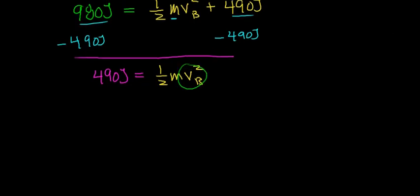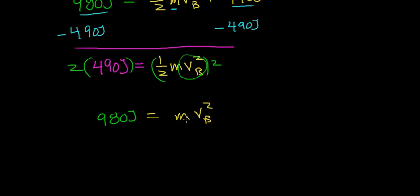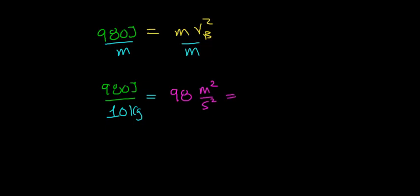Now since I'm looking for the velocity of the rock, I'm going to solve for it. To do that, I'll multiply both sides of the equation by two — what you do to one side you do to the other — giving 980 joules equals the mass of the rock times the velocity of the rock squared. Then I'll divide both sides by the mass of the rock. 980 joules divided by 10 kilograms equals 98, and a joule divided by a kilogram works out to meters squared per second squared. That equals the velocity of the rock at point B squared.